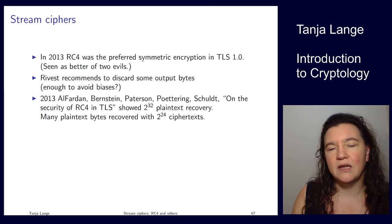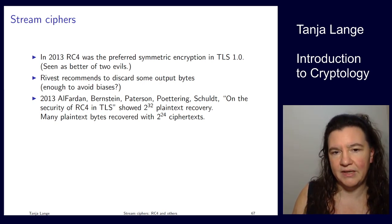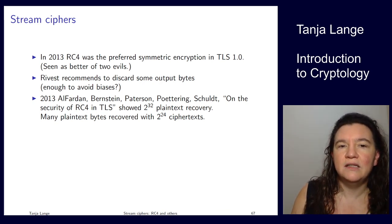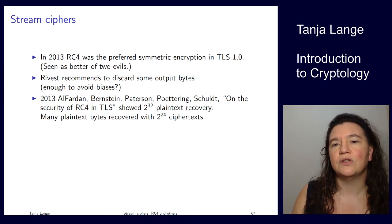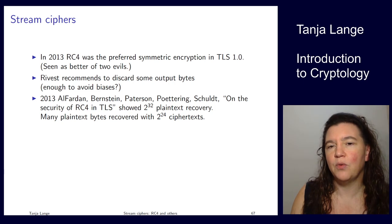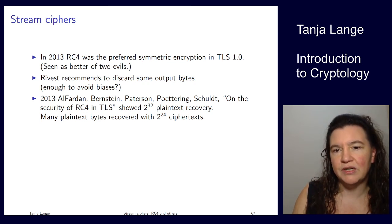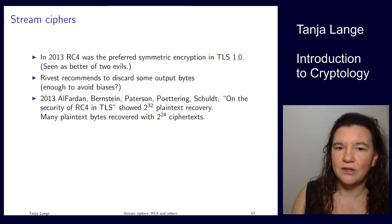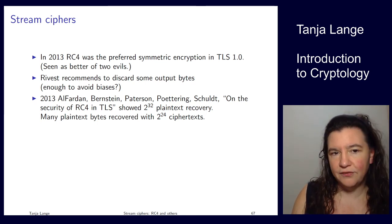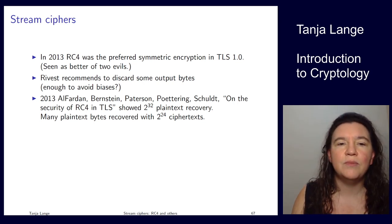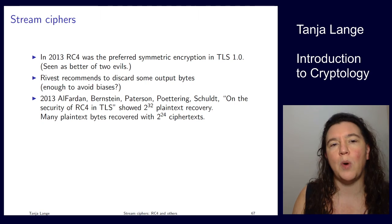In 2013, Bernstein showed it's possible to recover plaintext with 2^24 ciphertexts, and basically 100% recovery with 2^30. At that time RC4 was still the preferred symmetric cipher in TLS 1.0 and 1.1, where the main alternative was AES with CBC mode. CBC had some attacks, so people preferred RC4 — but RC4 is clearly broken too.